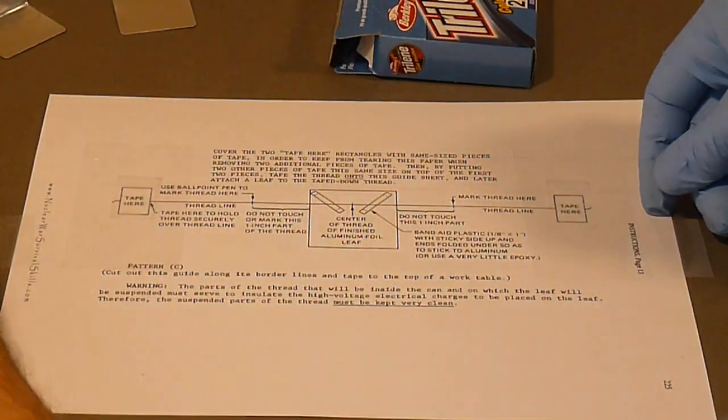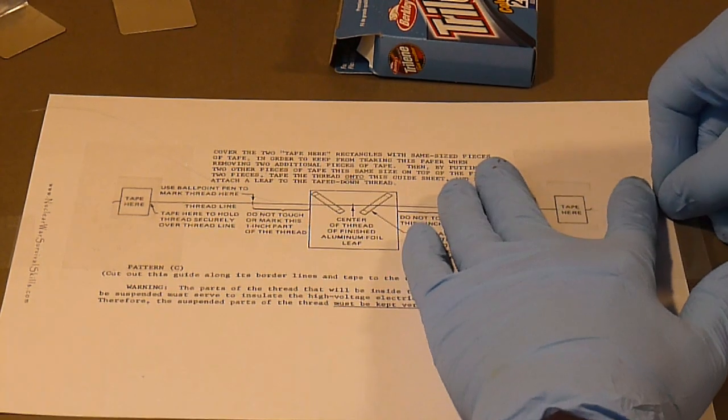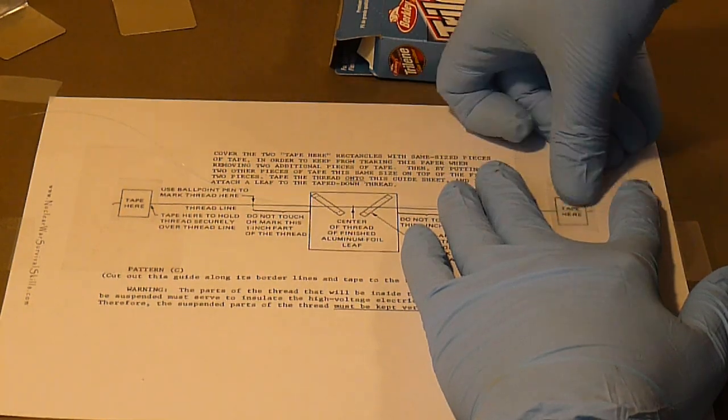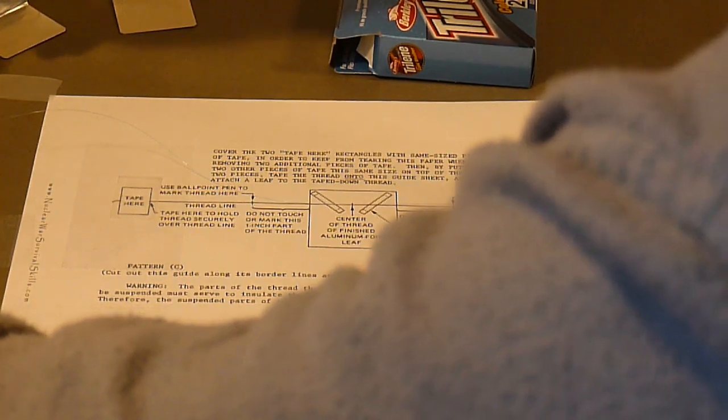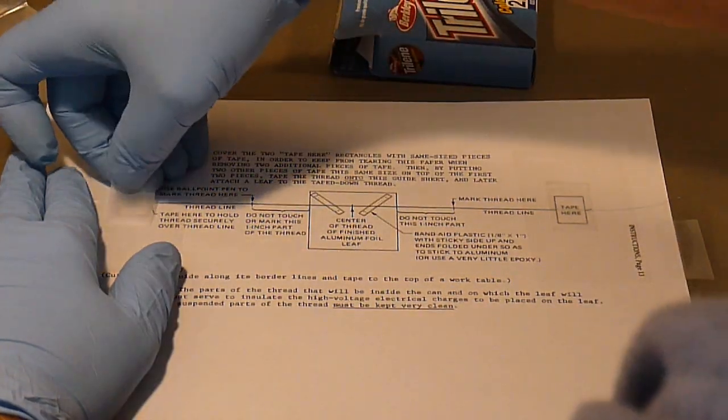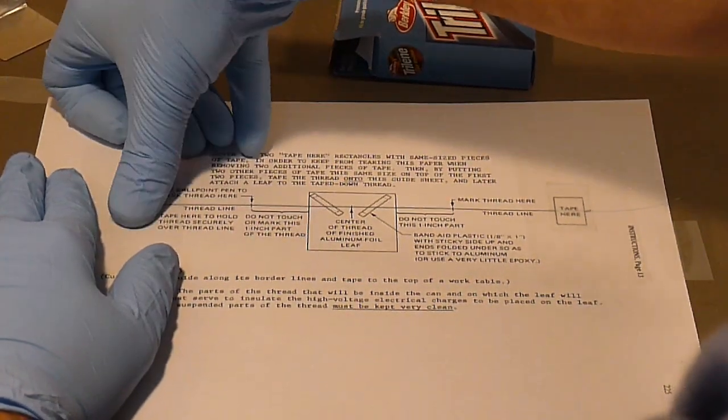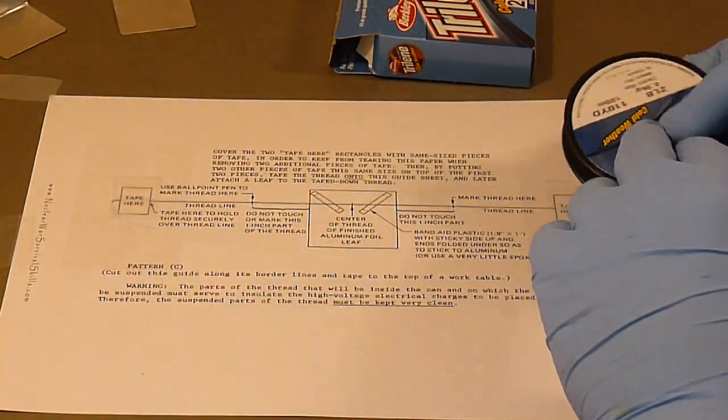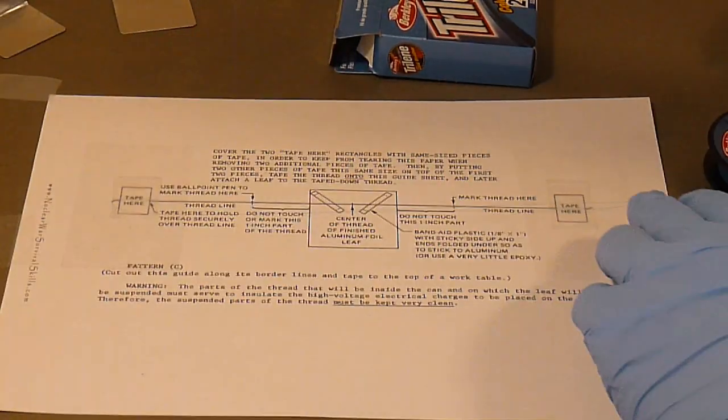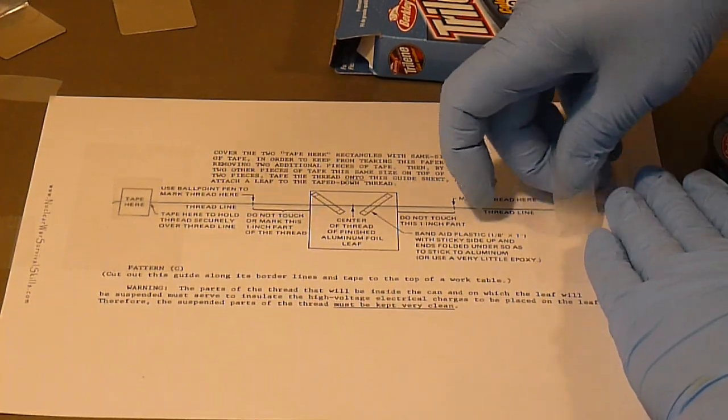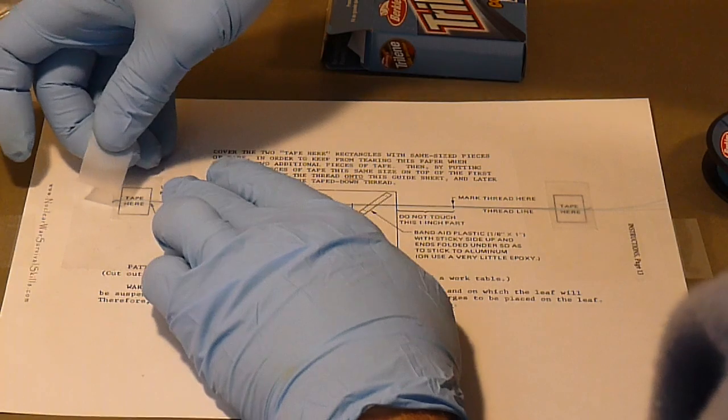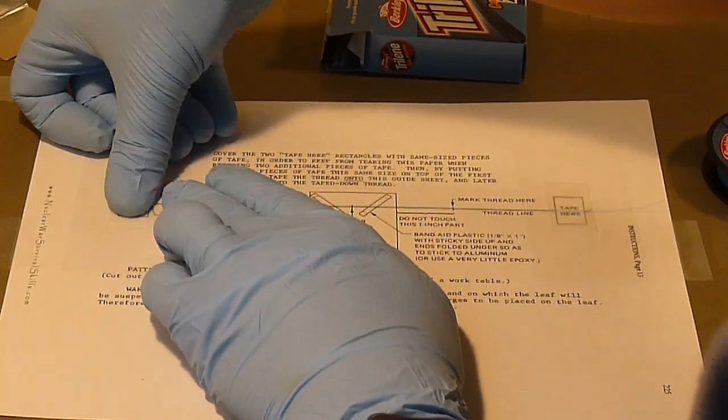Wearing vinyl gloves, unwind a 12-inch long piece of clean number 2 fishing line and tape down the leading edge to the right 'tape here' box, making sure the fishing line is on top of the thread line on the paper. Pull the other end of the line so it is directly over the thread line and tape it down to the left 'tape here' box. Unwind another 12 inches of line in the opposite direction going back to the right 'tape here' box. Make sure it is directly over the thread line on the paper. Tape both ends down again. You should now have two threads stretched straight over the marked thread line.